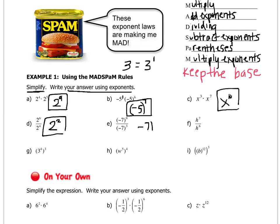E, negative 7, put it in parentheses, and when you're dividing, you subtract the exponents and keep the base. So 9 minus 3 is 6. Negative 7 to the 6th.